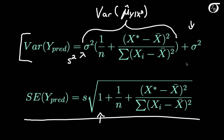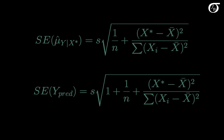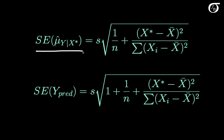The extra sigma squared on the end accounts for the additional variability. Looking at the two standard errors side by side: the standard error of the estimator of the mean of y versus the standard error of a prediction of a single value — they differ only in that one extra term. This comes from the fact that y values are assumed to vary about the true regression line with a variance of sigma squared, so there is added extra variability in predicting a single value as opposed to estimating the mean of all values at that point.